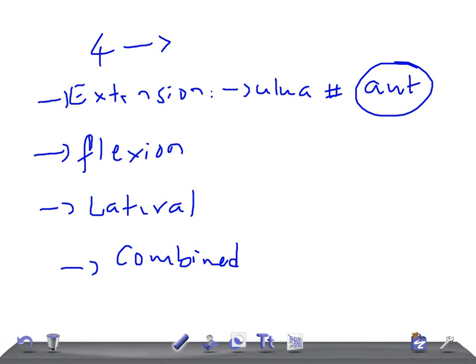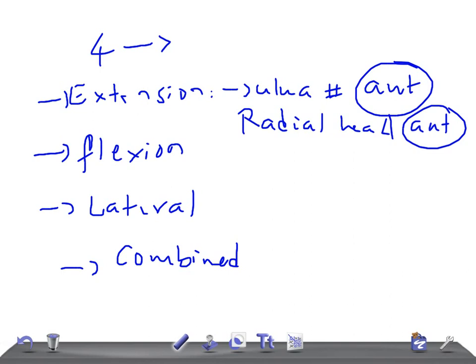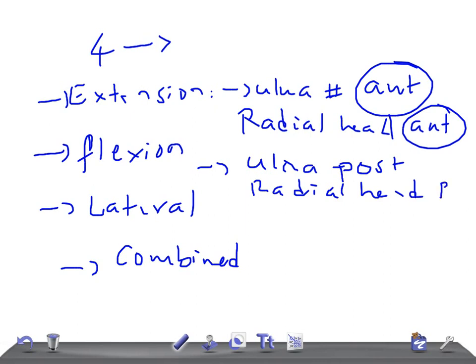In the extension type, the ulna fracture angulates anteriorly and the radial head also dislocates anteriorly. In the flexion type of injury, the ulna fracture angulates posteriorly, and the radial head dislocates posteriorly as well. So in a flexion type of injury, both the ulna fracture angulation and the radial head dislocation are in the posterior direction.